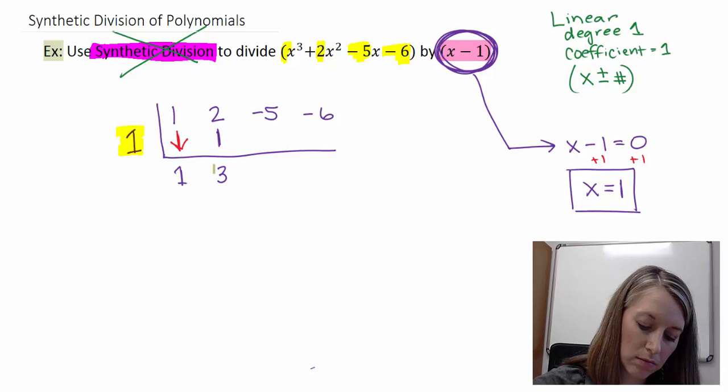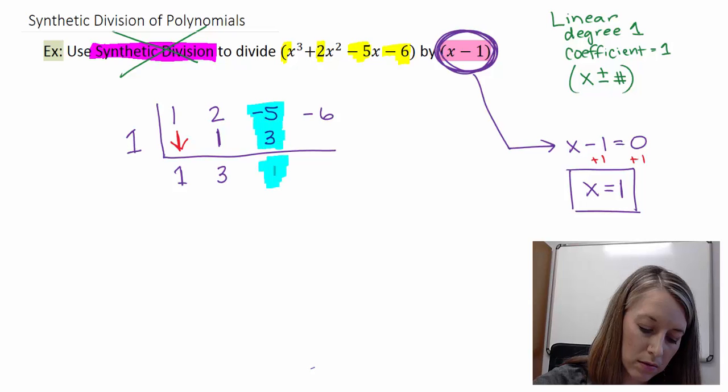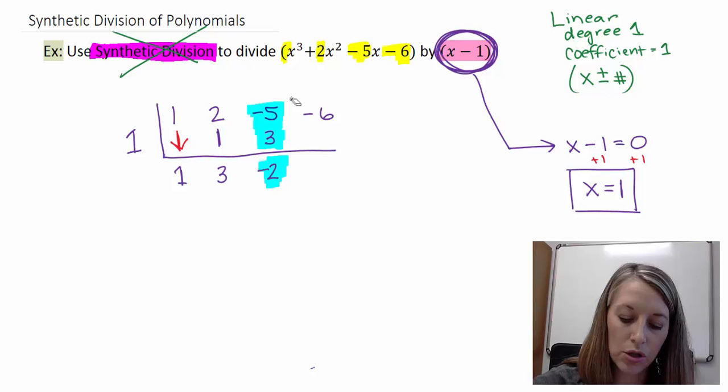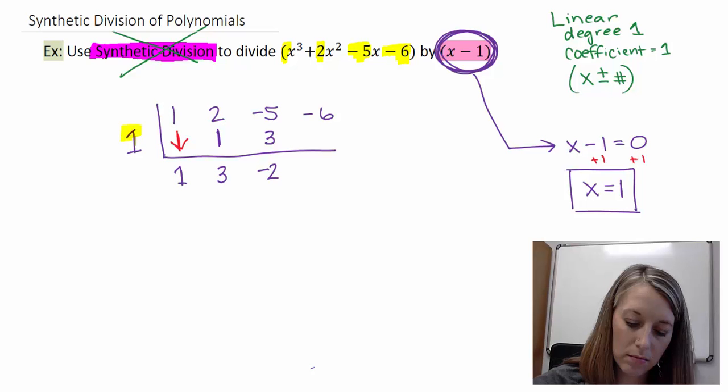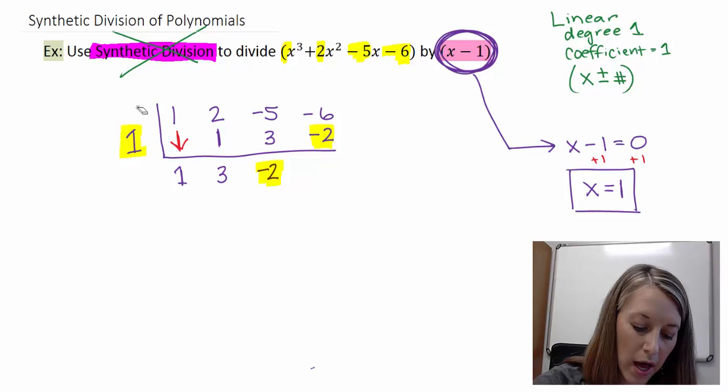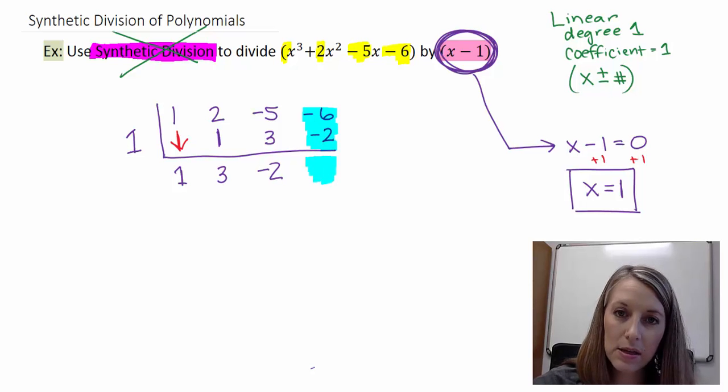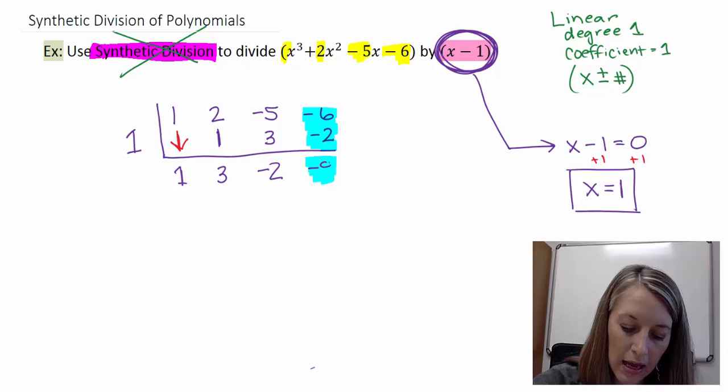So you take 1 times 3 to put in this spot here, and 1 times 3 gives you 3. And then you combine these two numbers to put there. And so negative 5 plus 3 gives you a negative 2. And then you repeat multiplying. 1 times negative 2 goes in this spot here. So 1 times negative 2 gives you negative 2. And then you add these two numbers to put in that spot there. Negative 6 plus a negative 2 gives me a negative 8.